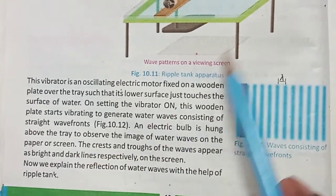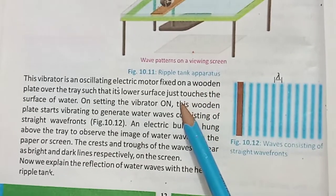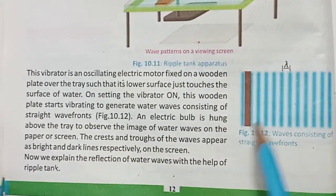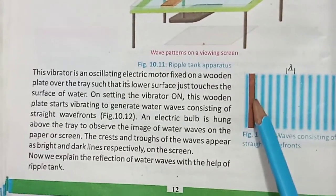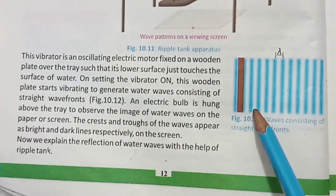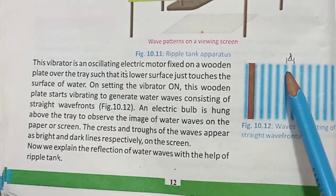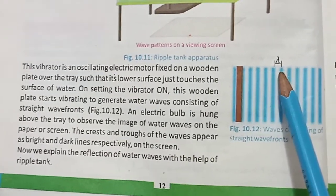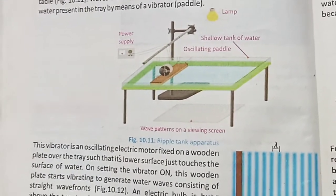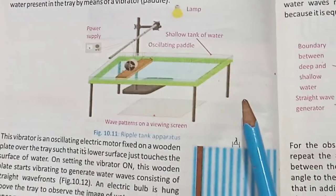An electric bulb is hung above the tray to observe the image of the water waves on the paper or screen. We will see the waves through shadows projected onto the paper below. The crests of the waves appear as bright lines and the troughs as dark lines on the screen. This setup allows us to observe the characteristics of waves.